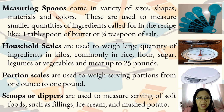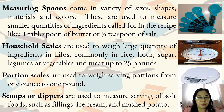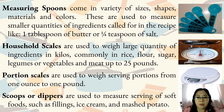The household scales are used to weigh large quantities of ingredients in kilos, commonly rice, flour, sugar, legumes or vegetables, and meat up to 25 pounds, while the portion scales are used to weigh serving portions from one ounce to one pound.